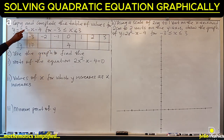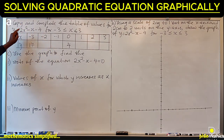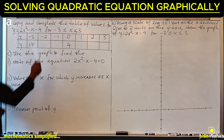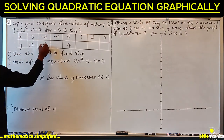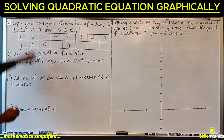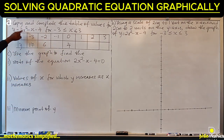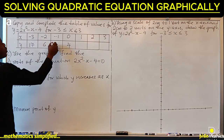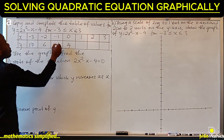Let's substitute x = -2: minus 2 squared is 4, times 2 is 8, minus minus 2 is 10, and 10 minus 4 is 6. For x = -1: minus 1 squared is 1, times 2 is 2, plus 1 is 3, and 3 minus 4 is minus 1.